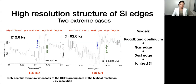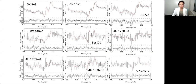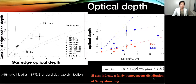For all the sources in our survey, we used broadband continuum models for the fitting. For the narrowband, we used the silicon gas edge model, dust edge model, and ionized silicon models. Here is the overall view of the fitting for the sources in our survey in different locations of the galactic bulge — I just showed you GX5-1, and this is GX3+1.